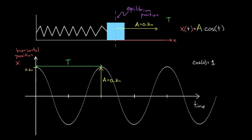At cosine of zero, cosine is one. When does cosine get back to one? That's going to be when the argument is two pi. So we're going to be using radians—most physicists and professors use radians for this case. Cosine of two pi would again be one, because that's when this function has gone around one whole time and gets back where it started.